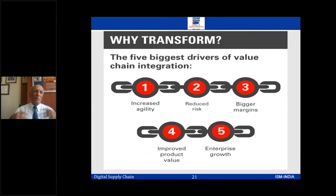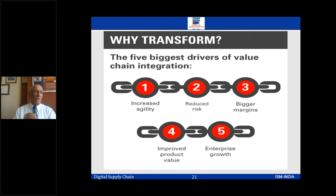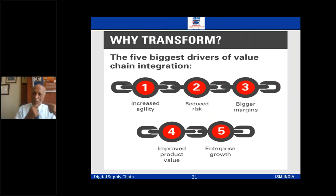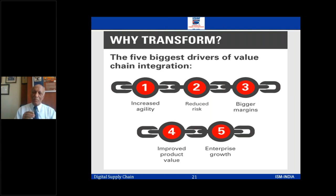Everything is digital. When this digital transformation happens, we increase agility, responsiveness, and cut down risk. Supply chain risk should not come at the last minute. Then there are bigger margins, improved product values, and enterprise growth. Today we have manual data gathering across systems and roles — if one person doesn't come to the office, work gets stuck. We are moving toward real-time connections and digitized collaborations, where customer, supplier, and I all get the same information and can collaborate together.